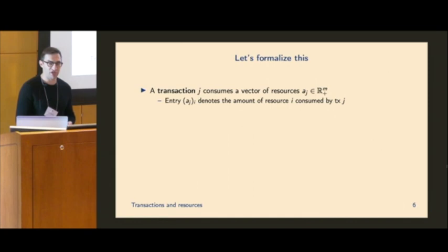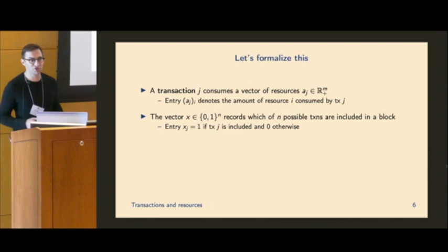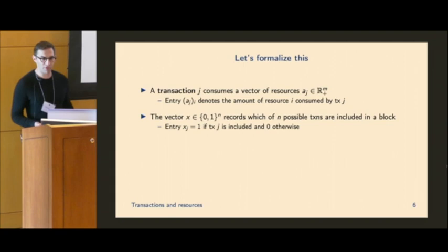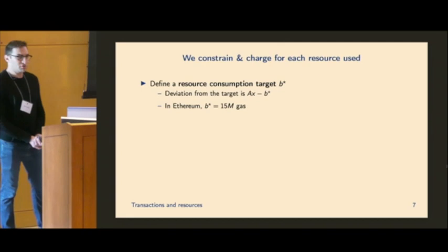And then we're going to formalize transactions as each transaction j is going to consume a vector of resources, a non-negative vector aj. And so the ith entry of that vector is just the amount of resource i consumed by transaction j. We're going to introduce this vector x, which is going to record which of all possible transactions. So say we have n transactions in the mempool, xj is going to be one if that transaction j is included and zero otherwise. And that allows us to write the quantity of resources consumed by a block very simply as just a times x, where a is this matrix where each column is going to be the resource vector for transaction j and x is this zero one binary vector that selects which of these we use and which is included in the block.